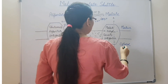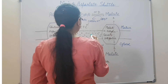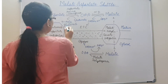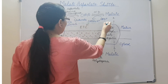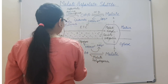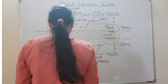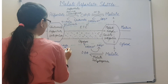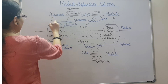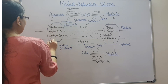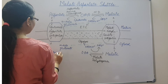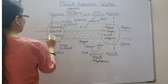We have seen that malate is imported by the mitochondrial matrix through the antiporter, so this import is coupled with the export of a certain molecule. This molecule is alpha-ketoglutarate. The alpha-ketoglutarate is exported to the cytosol through the malate-alpha ketoglutarate antiporter. Then the aspartate produced in the mitochondrial matrix is exported to the cytosol, and this uses the glutamate-aspartate antiporter.